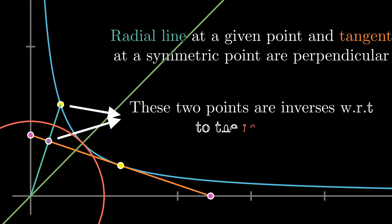Also, their point of intersection is the inverse of the radial point with respect to a circle centered at the origin and tangent to the hyperbola. All this with simple geometry.